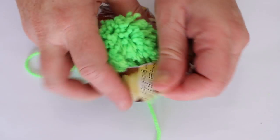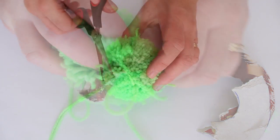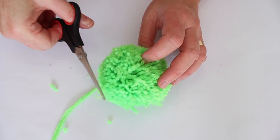Now you need to slide the cardboard disc off. As you can see mine broke, but it doesn't matter. Shake your pom-pom to fluff it up and then cut off the loose ends.